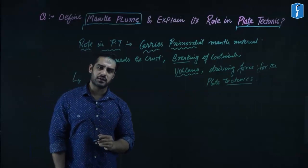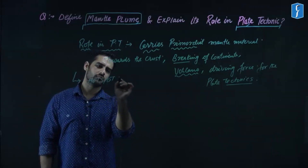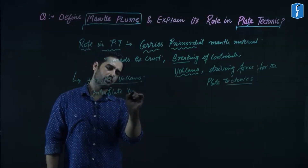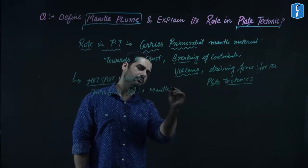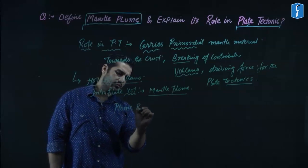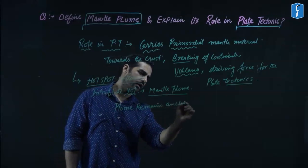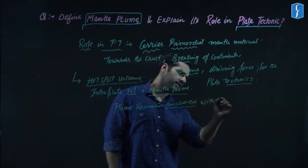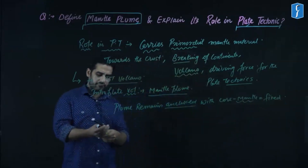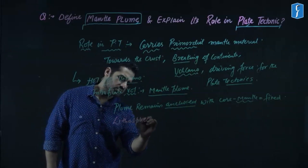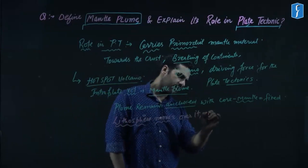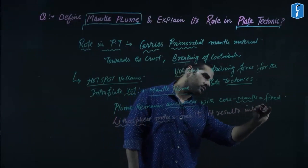A second role: mantle plumes are responsible for hotspot volcanoes, also called intraplate volcanoes. The mantle plume is fixed — it does not move. When the lithosphere, which is mobile, moves over it, this results in a chain of volcanoes.